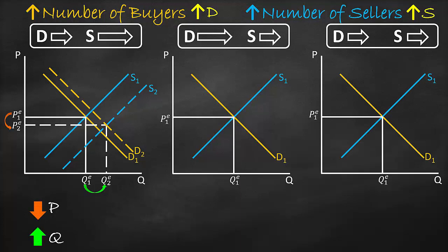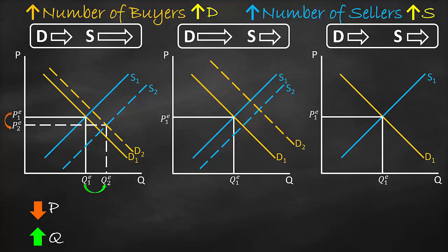In the second graph, we shift the supply curve to the right with a small shift and label it S2. Then we shift the demand curve to the right with a big shift and label it D2. The intersection of S2 and D2 is the new equilibrium point, giving new equilibrium price P2 and quantity Q2. We notice price increased from P1 to P2 and quantity increased from Q1 to Q2. To summarize: price increases and quantity increases.